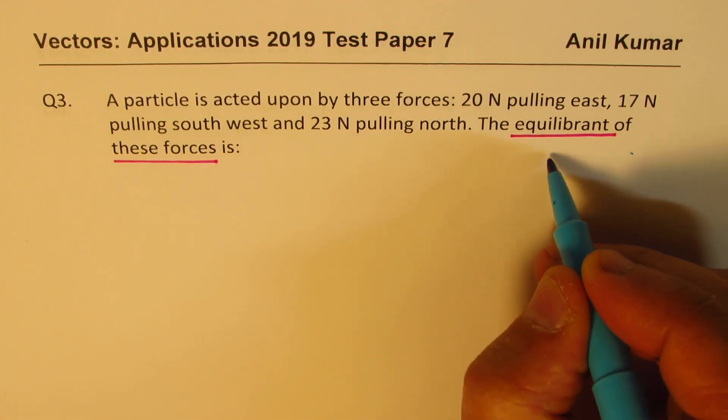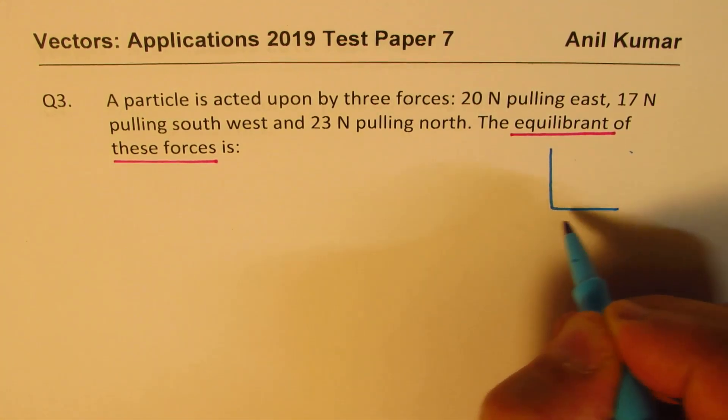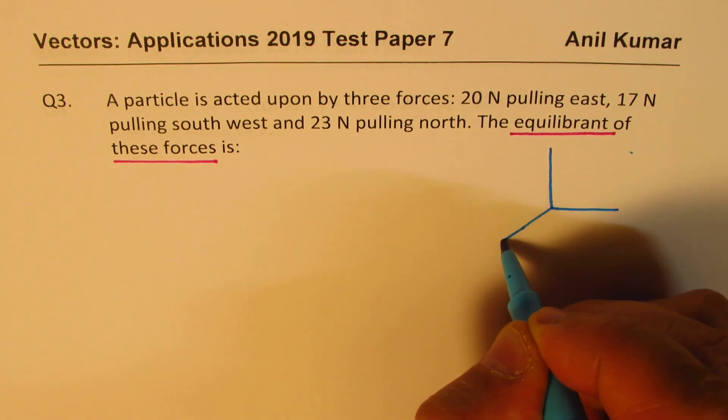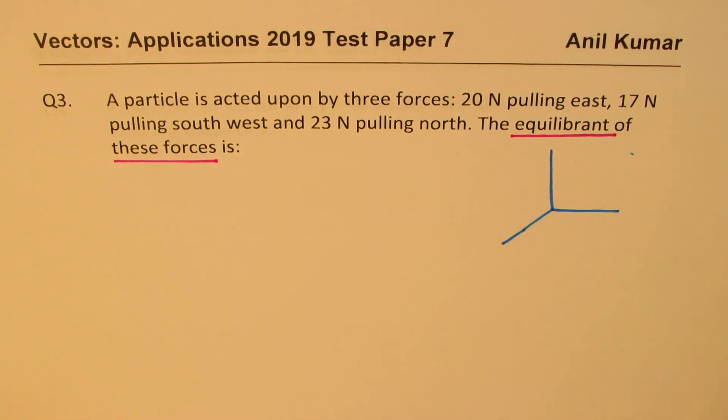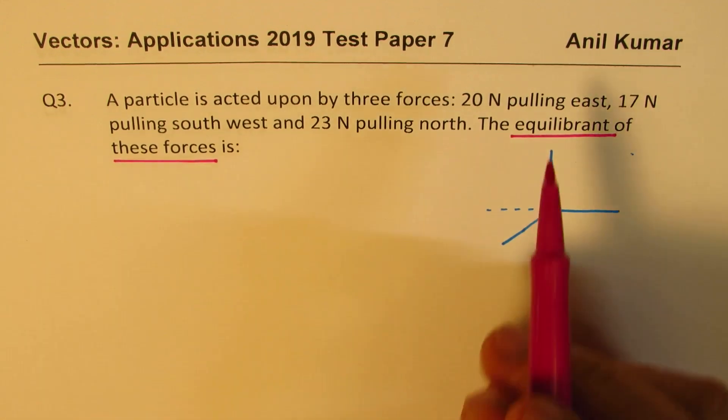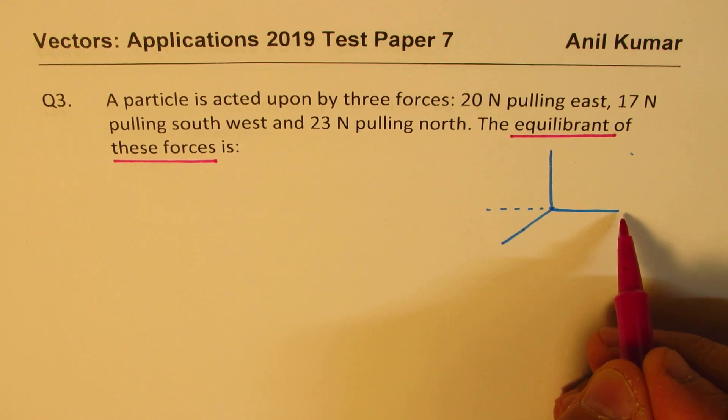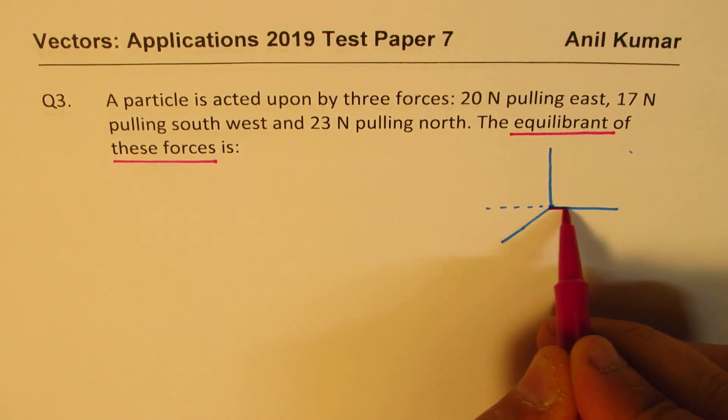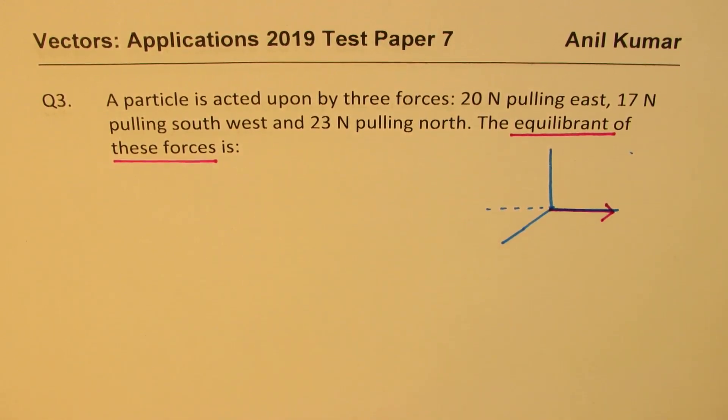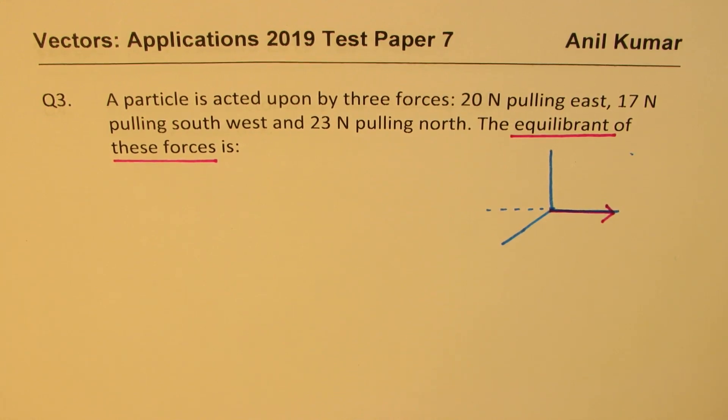Let's look into the diagram. So let's say these are the three forces. We should have drawn the axis kind of like this. So what I'm trying to say here is a force of 20 Newtons pulling east. So this is east direction.